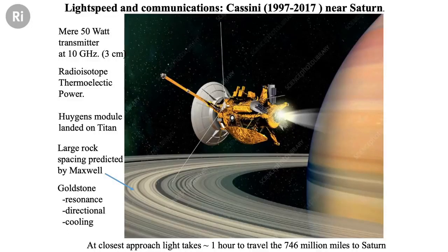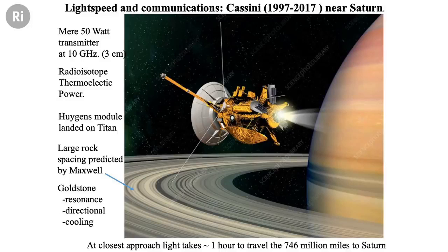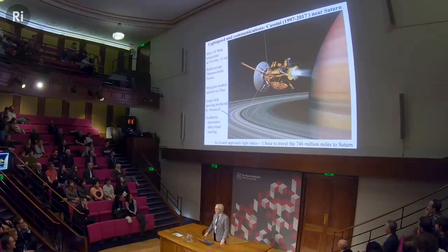It was put up in 1997 and expected to last four years. It lasted 20 years. What I want to emphasize here is just the amazing thing that the transmitter in this thing is 50 watts. That 50 watts pointed towards Earth can send ones and zeros, like Morse codes — dots and dashes — back to an object a bit like a television antenna on the roof of a house at the Goldstone facility in the outer suburbs of Los Angeles, which are 700 million miles away, and the radio waves take an hour to get there.